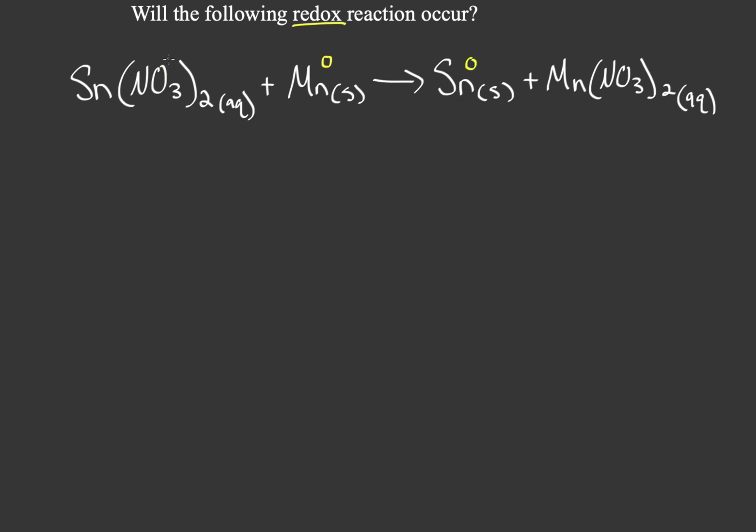Now nitrate has a negative one charge and there's two of them, so this total thing has a two minus. That means tin has to have a two plus in order for this to be neutral. And the same goes here, nitrate there's two of them so it's a two minus charge total, so manganese must have a two plus charge.